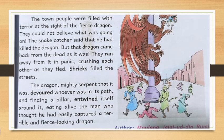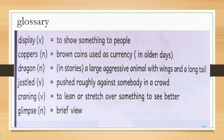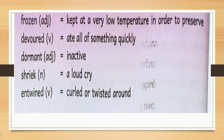I will give the meanings as assignment. Children, this is your assignment — Meanings: Display: to show something to people. Coppers: brown coins used as currency. Dragon: a large, aggressive animal with wings and a long tail. Jostled: pushed roughly against somebody in a crowd. Craning: to lean or stretch over something to see better. Glimpse: brief view. Frozen: kept at a very low temperature in order to preserve. Devoured: ate all of something quickly. Dormant: inactive. Shriek: a loud cry. Entwined: curled or twisted around.